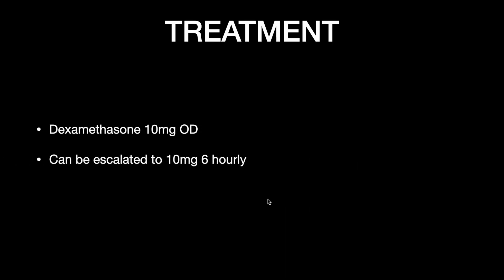If neurological symptoms are found, start with dexamethasone 10 mg once daily, provided the patient does not have severe symptoms like seizure or cerebral edema. However, if symptoms do not reduce with dexamethasone 10 mg OD, or if the patient has severe symptoms, the dose can be escalated to 10 mg every 6 hours for a period of 2 to 3 days. Seizure prophylaxis should also be added if the patient is having severe symptoms.